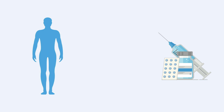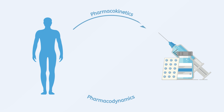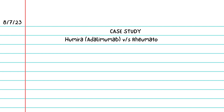PKPD stands for pharmacokinetics and pharmacodynamics. PK describes what the body does to a drug — like how fast it is absorbed into the blood or eliminated from the body. PD describes what the drug does to the body — like interacting with receptors and enzymes. PKPD is useful to understand, predict, and optimize drug-body interactions early in the drug development cycle.